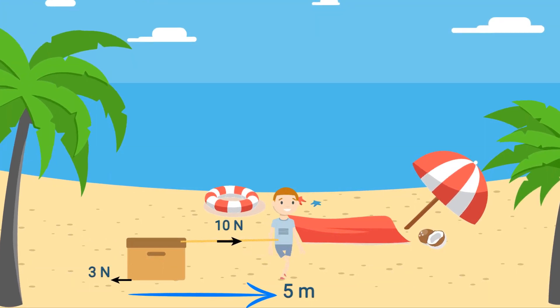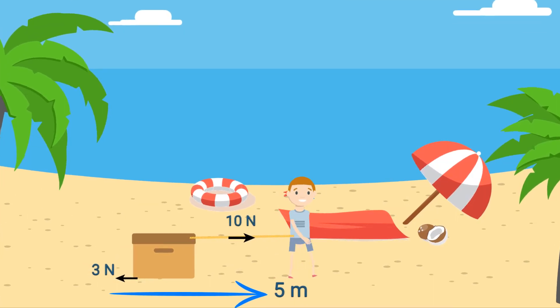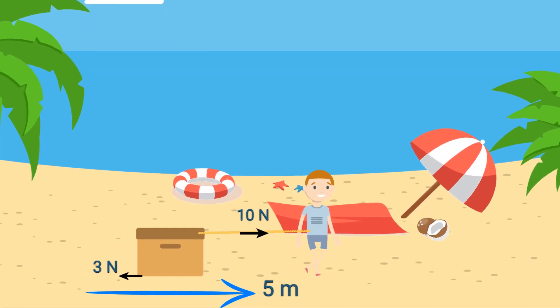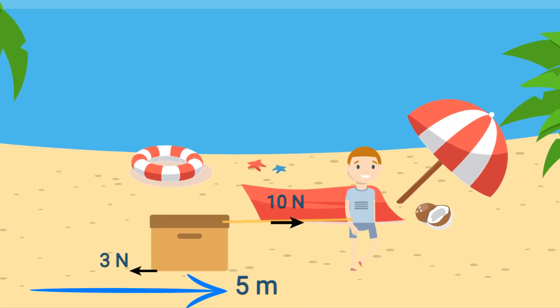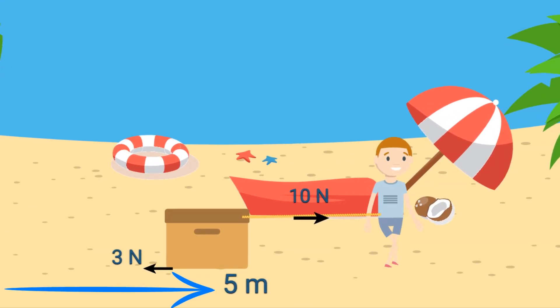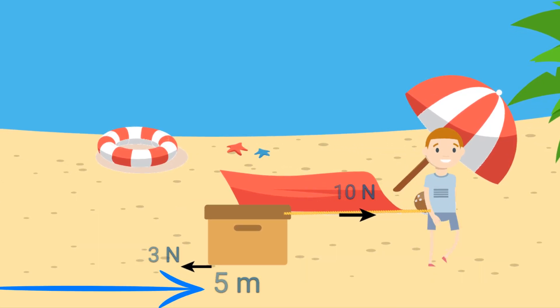Imagine this boy is pulling the box with a force of 10 newtons across the sand. There's a constant frictional force of 3 newtons acting on the box. And he pulls the box over a distance of 5 meters. What is his work done?